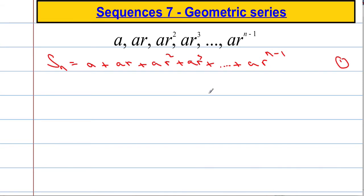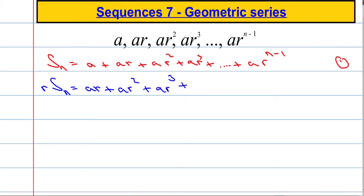I'm going to take equation 1 and multiply it by R to get equation 2. So I'm going to do R times S of n. The first term of this now gets multiplied by R, this is going to get multiplied by R, we get AR squared, AR cubed, and so on and so forth. At some point we get AR to the n minus 1, and we will get another term, AR to the n.